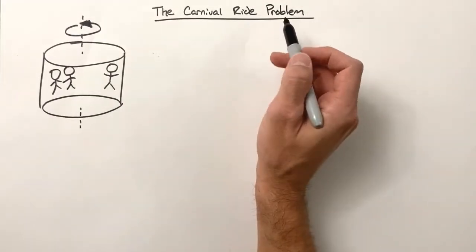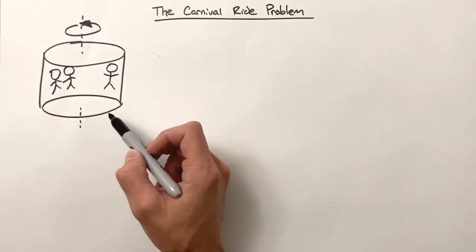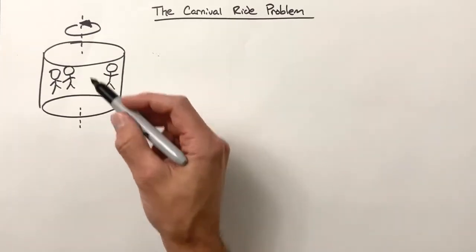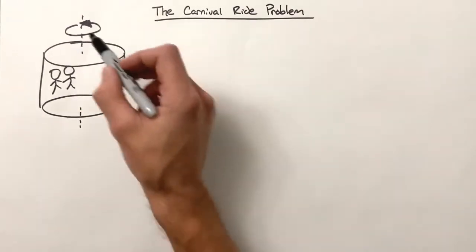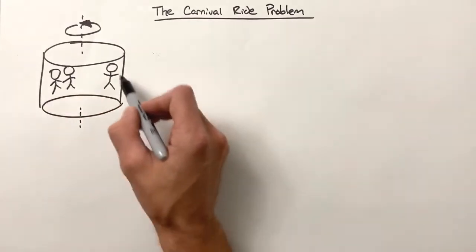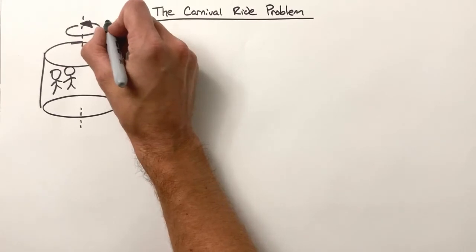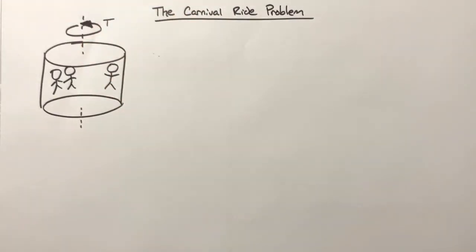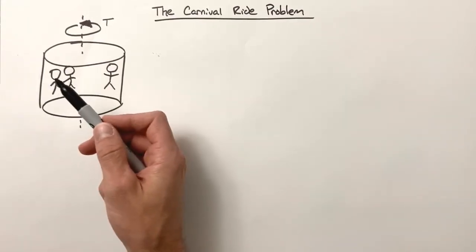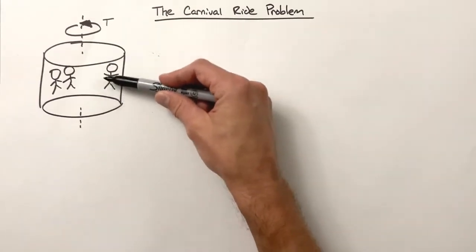This is called the carnival ride problem. The premise is we have a ride often found at carnivals, fairs, and other places where people pay for excitement. It's like a tiny barrel or room that you stick people in, and this thing spins around with some period T. Once it gets going fast enough, the floor drops out and the people are pressed up against the wall.